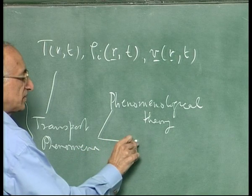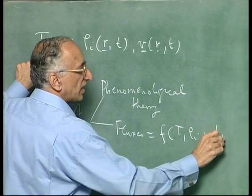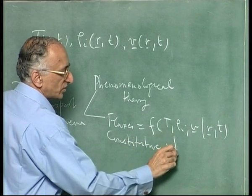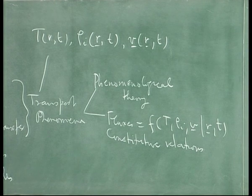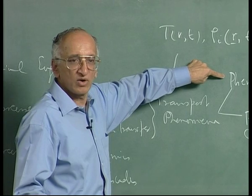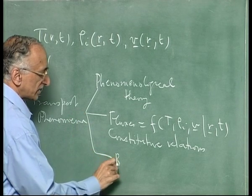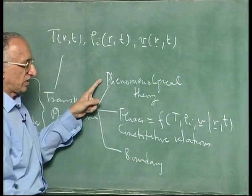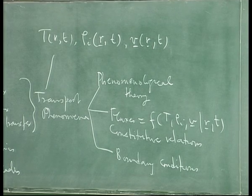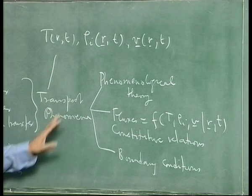Connecting the fluxes back to the state variables T, ρᵢ, V through constitutive relations, combined with boundary conditions, gives you the solvable phenomenological laws. You need the phenomenological theory — these are the universal laws that have so far not been contradicted, because nothing is proved in science; you only have uncontradicted experience. All of this comes under what is called continuum mechanics: you assume that the systems are large enough to contain a very large number of molecules so that discrete molecular changes can be treated as continuous differentials.